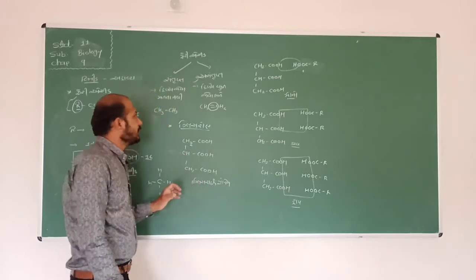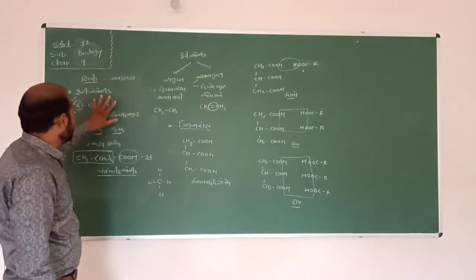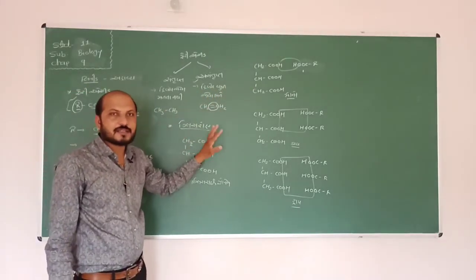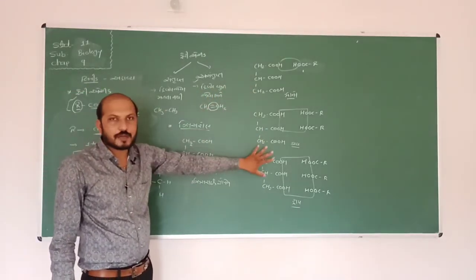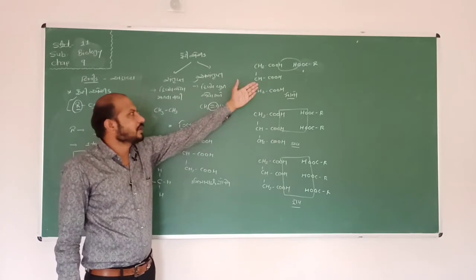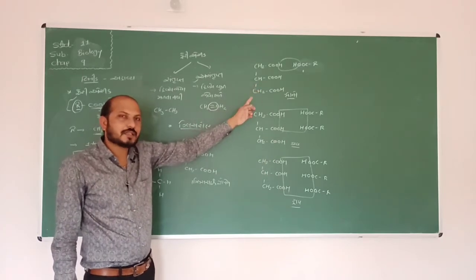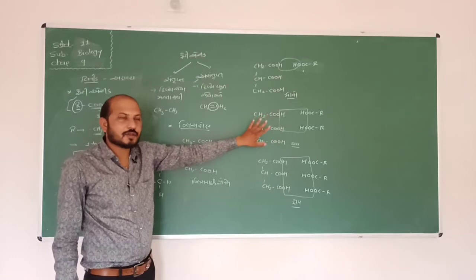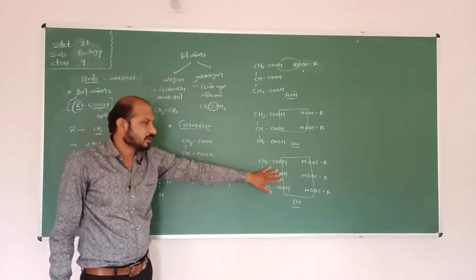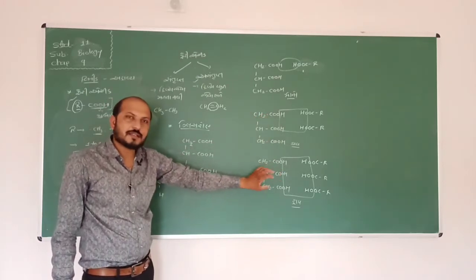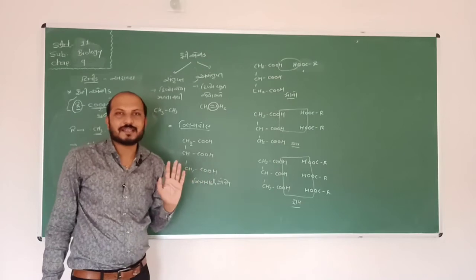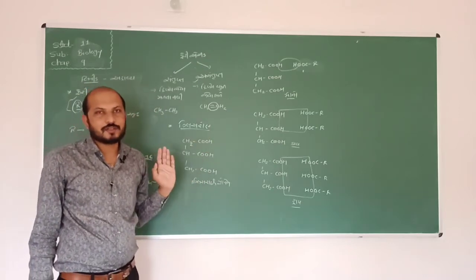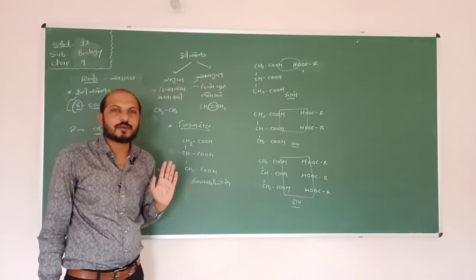So when we use the lipids: 1 fatty acid + glycerol and the 3 fatty acid + glycerol, we use the lipids. If we use 1 fatty acid glycerol, then it is mono; 2 fatty acid glycerol, then it is di; if we use 3 fatty acid glycerol, then we use the triglyceride. So it is mono, di and triglyceride.